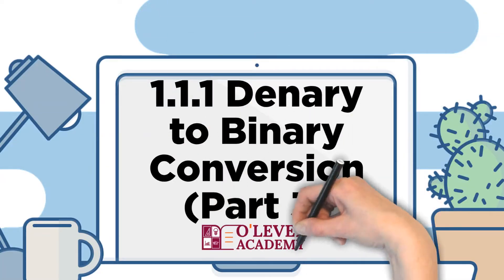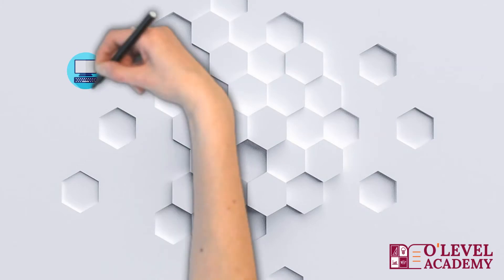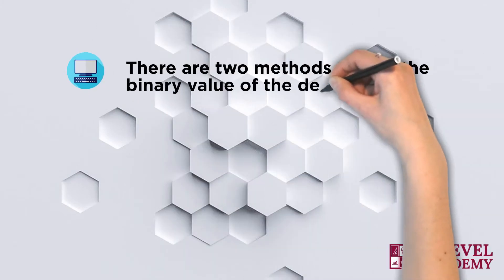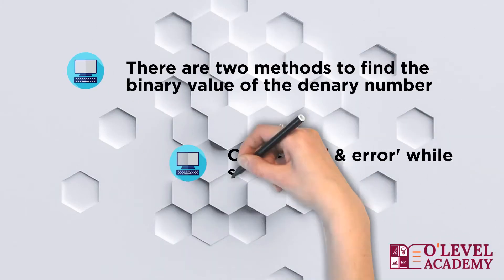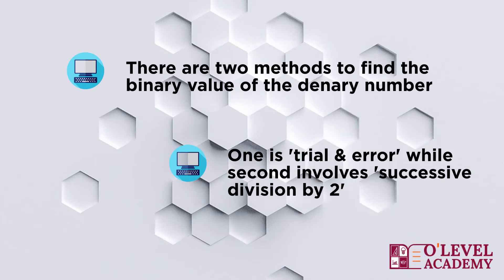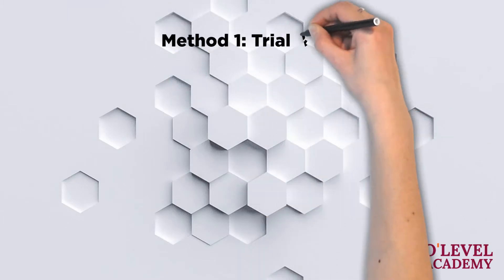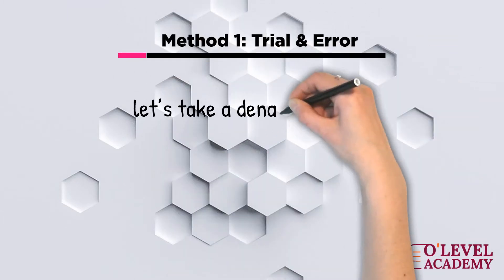Denary to binary conversion. There are two methods to convert a denary number to its binary representation. The first method is trial and error, while the second method involves the successive division of the number by 2. Let's understand both methods with an example.